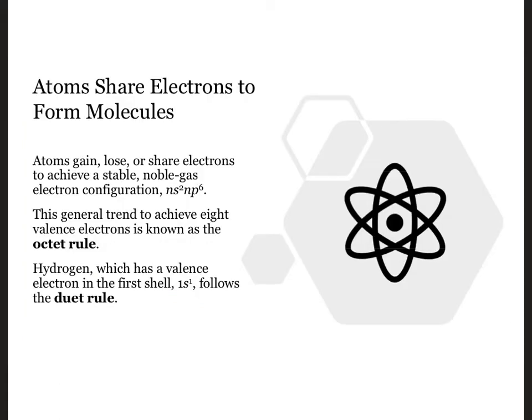Nonmetal atoms will share electrons to achieve a noble gas configuration, NS2NP6, which is known as the octet rule. We will encounter exceptions to the rule, to be sure, with hydrogen making its own duet rule right out of the gate, since it only has the 1s orbital requiring one more electron to achieve a helium configuration.